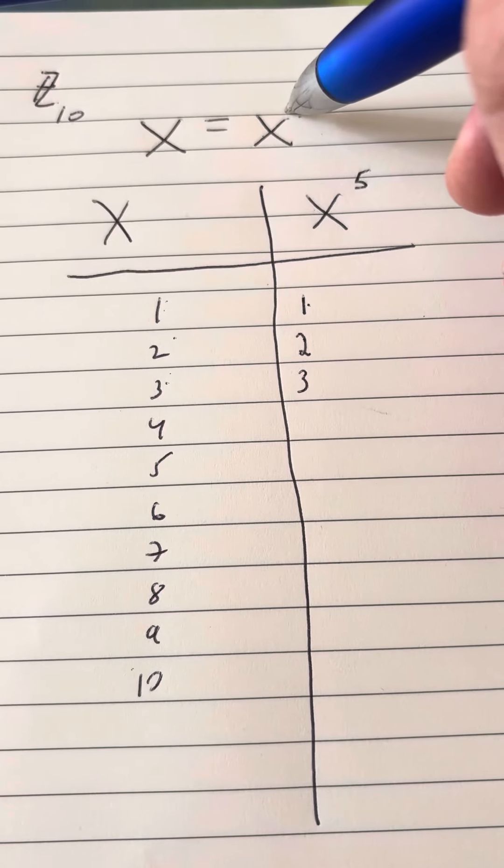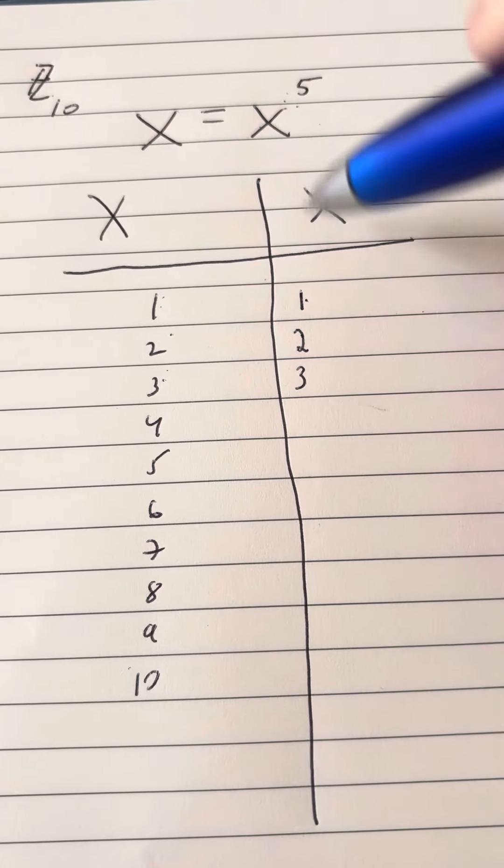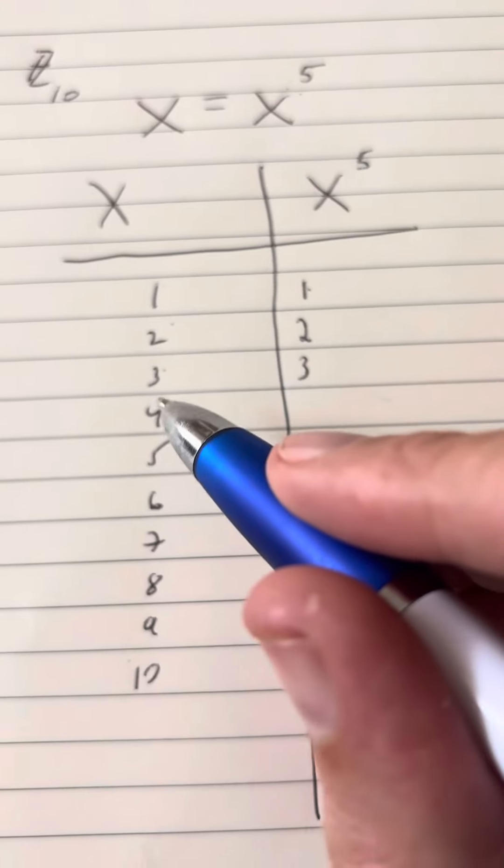So 1 to the 5th power is 1. 2 to the 5th power is 32, which has a remainder of 2 when you divide that by 10.